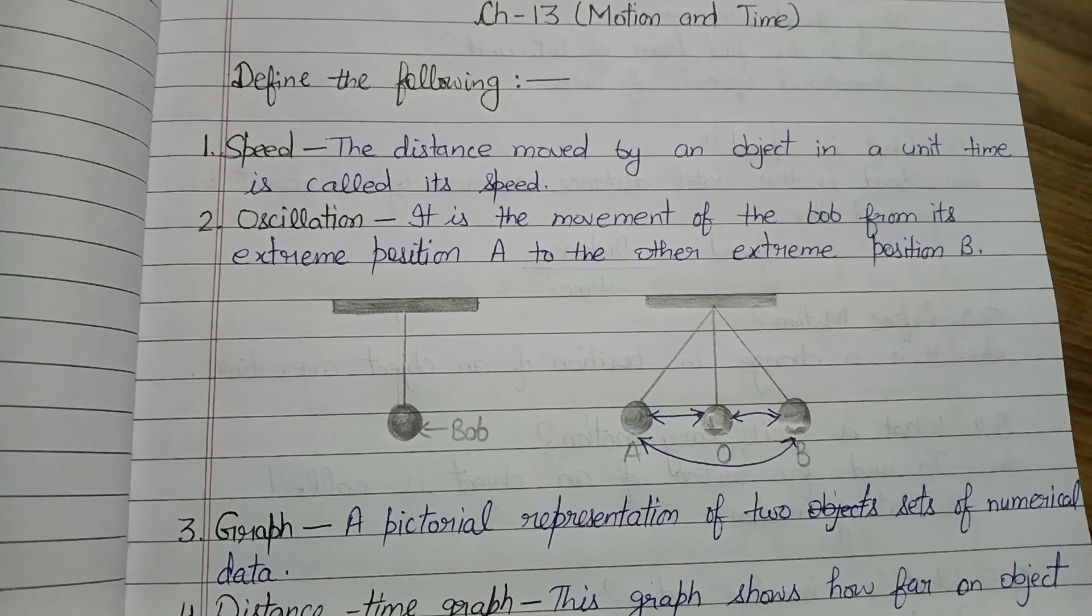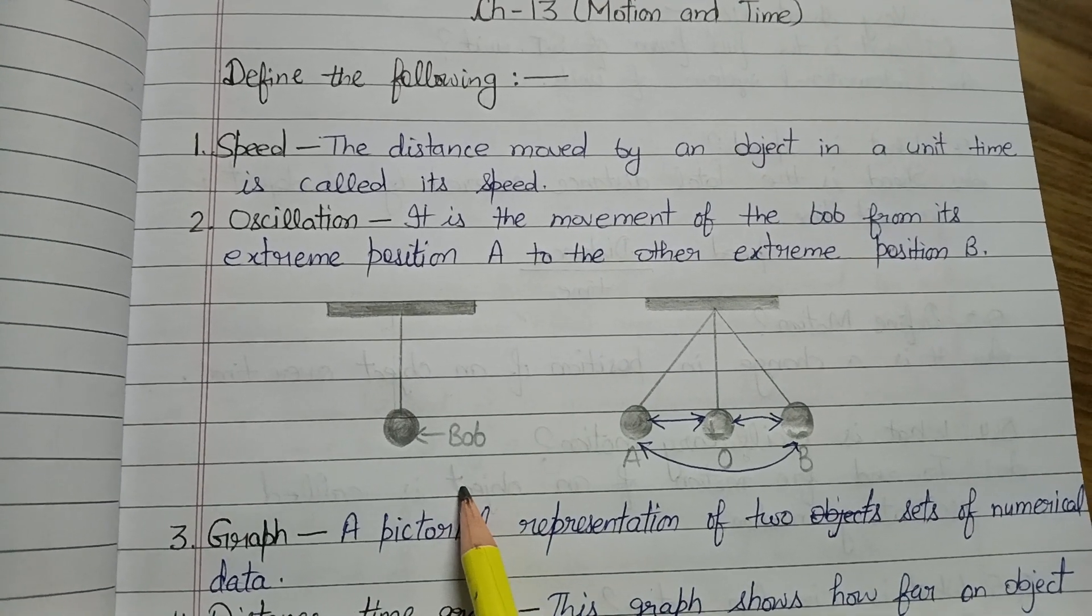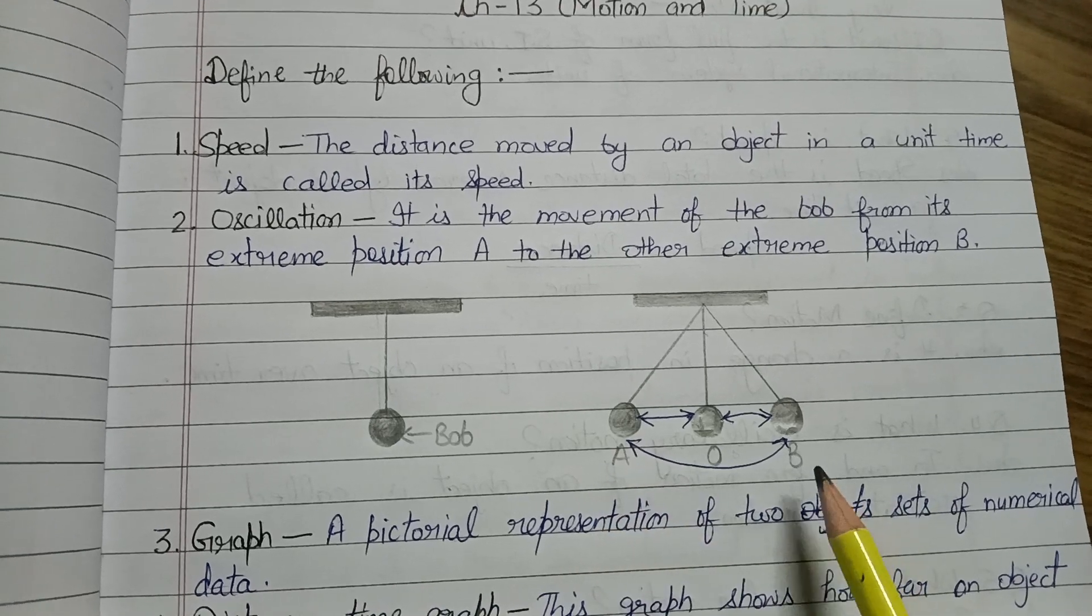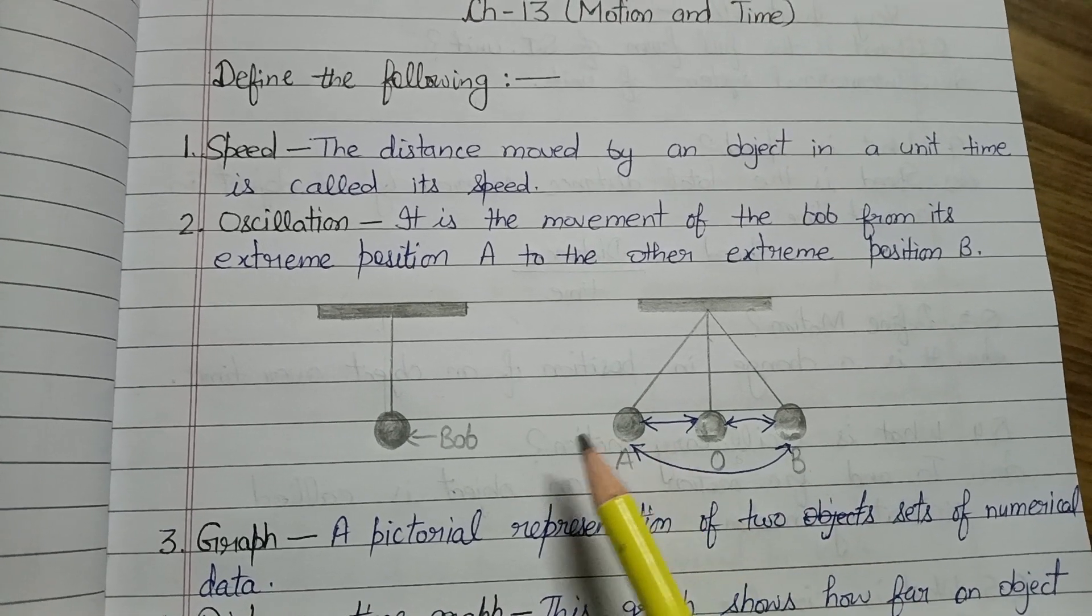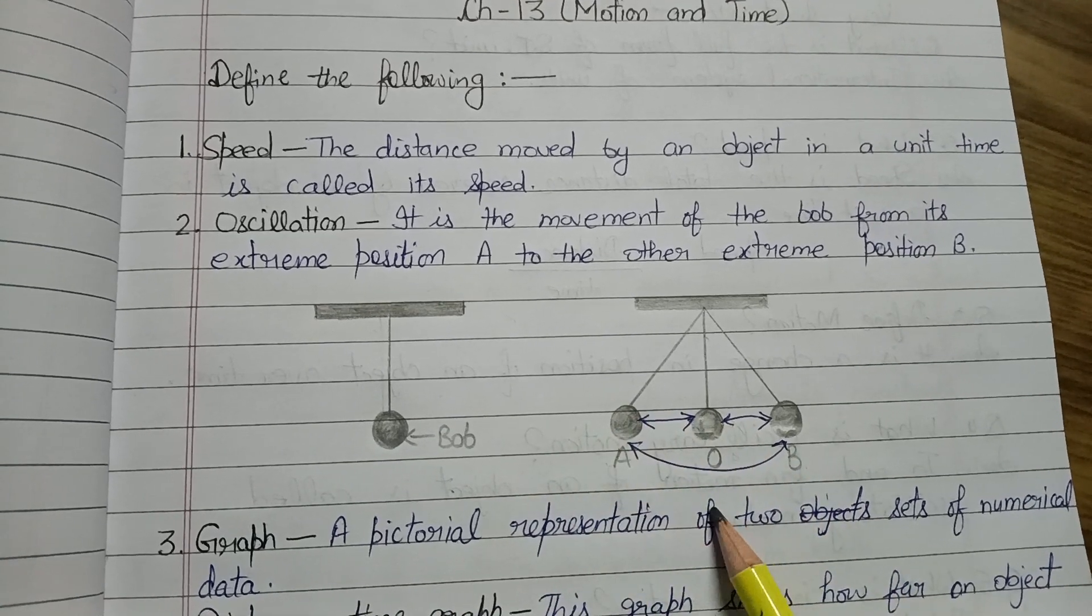Oscillation - it is the movement of the bob from its extreme position A to the other extreme position B. Yeh ek bob hai, metallic ball hai. Jab wo ek extreme position A se B tak jata hai ya B se A tak aata hai, to usse jitna bhi wo time lagta hai, us mein ek complete oscillation hota hai.